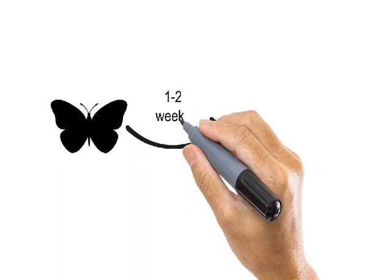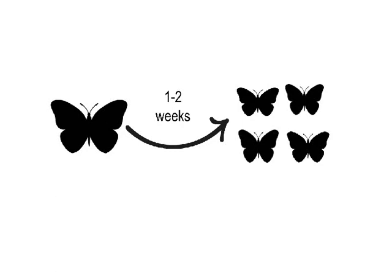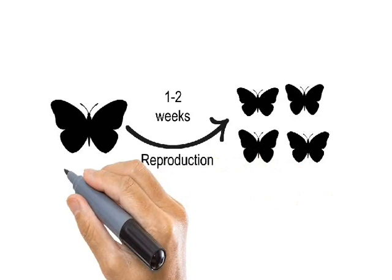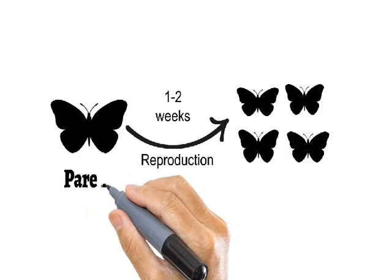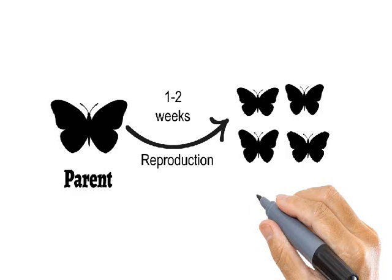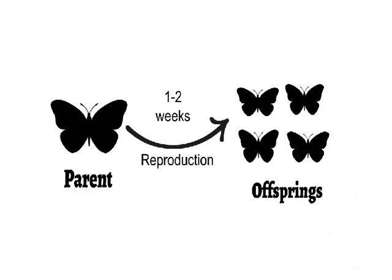The organisms — for example, butterflies — during their lifespan of 1 to 2 weeks give rise to new butterflies. This is called the process of reproduction. The organism which gives birth to a new organism is called the parent, and the organisms newly generated from the parent are called offsprings.